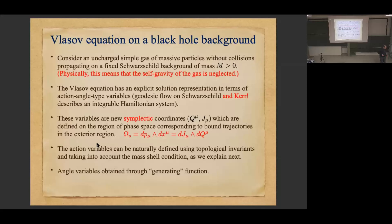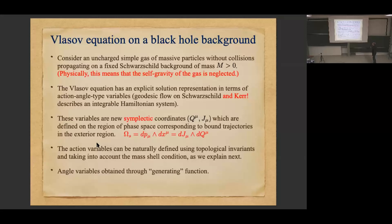How do you solve the Vlasov equation on a curved background? In general that's not completely trivial because you have terms involving Christoffel symbols or the roots of the metric in the equations. There is a very nice tool — action-angle type variables, which Marcus also used in his talk — because we are in GR, not in Newtonian theory. What I'm going to show you is that the geodesic flow on a Schwarzschild background forms a completely integrable Hamiltonian system.